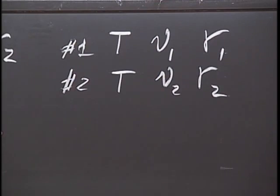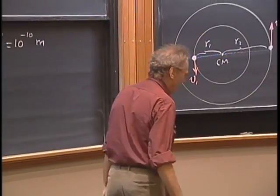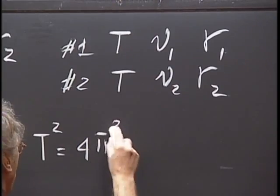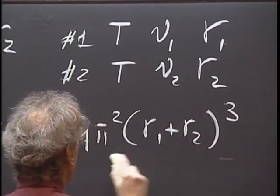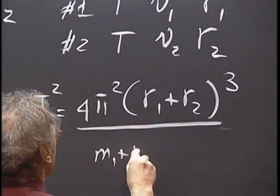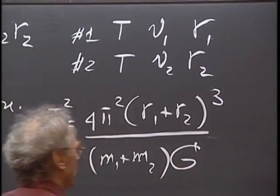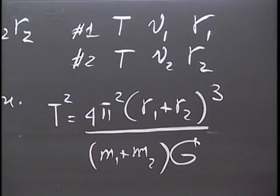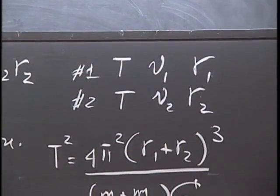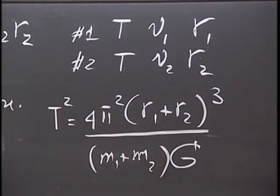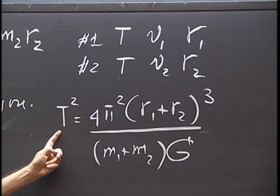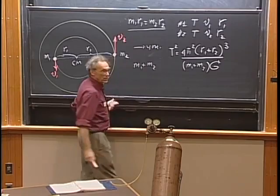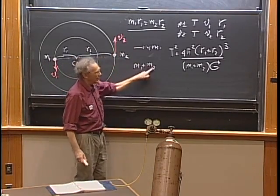There is more. You know Newton's law of gravity, which leads to Kepler's third law: T squared equals 4 pi squared times (r1 plus r2) cubed, divided by (m1 plus m2) times G, the gravitational constant. You know r1 and r2 from the Doppler shift measurements, so you know (r1 plus r2). You also know that m1 r1 equals m2 r2. So you have two equations with two unknowns, and you find m1 and m2 — the masses of the individual objects.